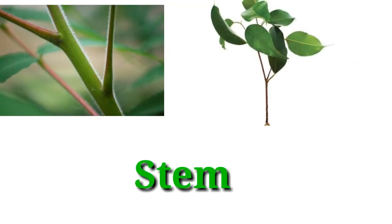Next is stem. Stem grows above the ground and after the root. It can be long, short, green, or brown. Stem helps carry water, and also helps the plant to stand straight.